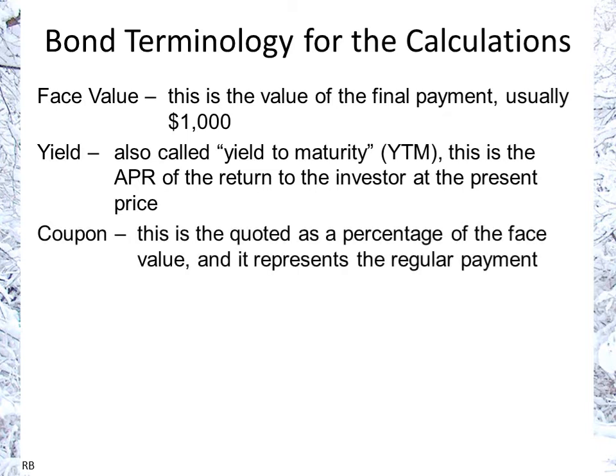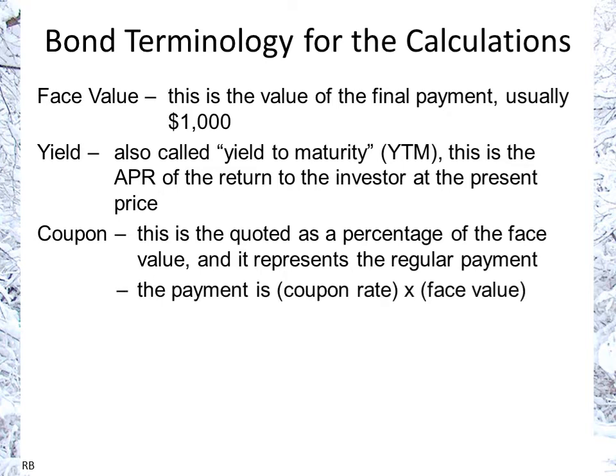Then we have coupon. This is quoted as a percentage of the face value and it represents the regular payment. Even though it's quoted as a percentage, it's not directly related to the interest rate. You take the coupon, multiply it by the face value, and that gives you the annualized coupon payment. If you have a semi-annual pay bond, you're paid twice a year, so the payment is half that amount. The annual payment is always coupon rate times face value.